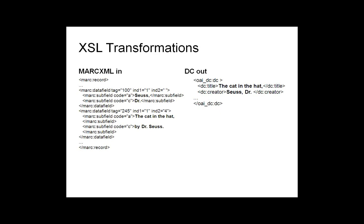We've taken the heavily encoded, complex MARC XML, extracted just the data we wanted, sorted it differently, and turned it into the Dublin Core format needed for our repository. This is just a simple example — you can do things that are far more complex with XSLT. You can really make it into what you want, though there may be some limitations based on how the data is formatted in your original XML file.